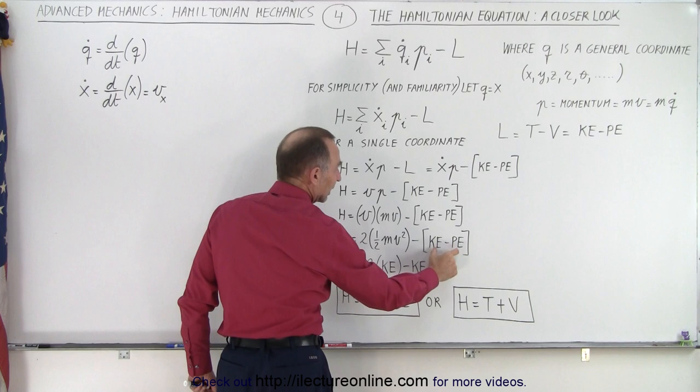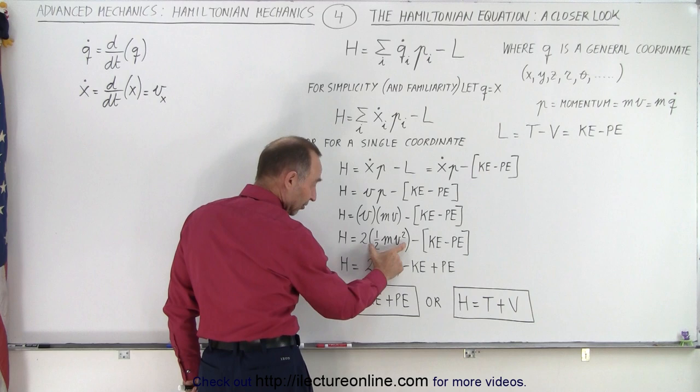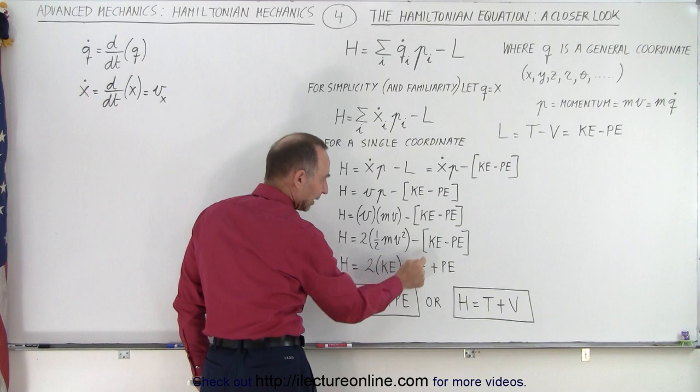Then if we subtract the kinetic energy minus the potential energy, notice we get twice the kinetic energy here, because one-half mv squared is the kinetic energy in the X direction for this particular example.